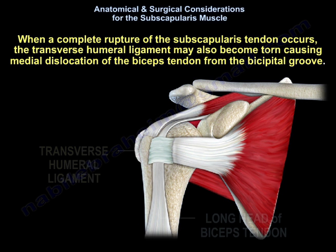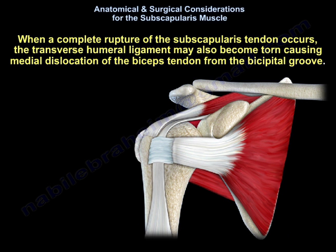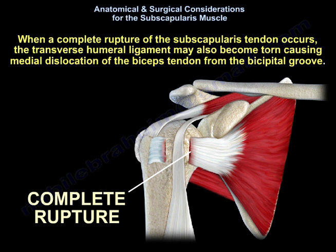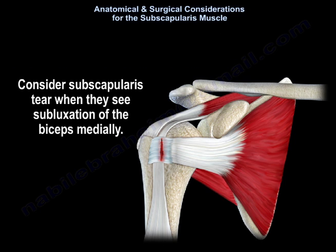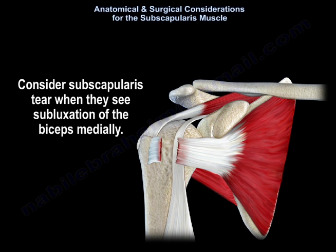When a complete rupture of the subscapularis tendon occurs, the transverse humeral ligament may also become torn, causing medial dislocation of the bicep tendon from the bicipital groove. Consider a subscapularis tear when you see subluxation of the bicep medially.